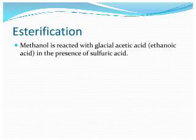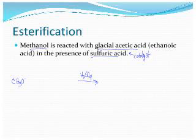Let's go ahead and look at an esterification reaction — a problem you might be asked to do in a test situation. We are going to react methanol with glacial acetic acid in the presence of sulfuric acid. The sulfuric acid here is actually a catalyst, so we'll write it over the arrow. We have methanol, which is CH₃OH, and we're going to react it with glacial acetic acid — glacial meaning the concentrated form of acetic acid or ethanoic acid, which has two carbons in it. We are going to remove two H's and an O to make our ester.